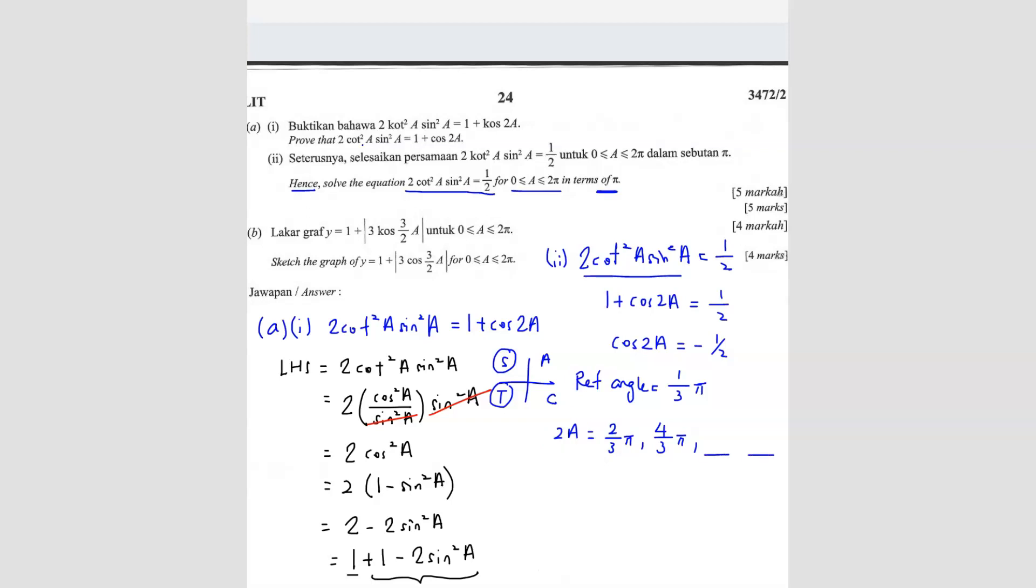So there is another 2 more values here. The third value you're going to find based on the first value here. You're going to take this, you're going to plus another 360 degree. 360 degree means 2 pi. So you take 2 over 3 pi plus 2 pi, so you get 8 over 3 pi. And then the fourth value is you're going to take this plus 2 pi, so you get 10 over 3 pi.